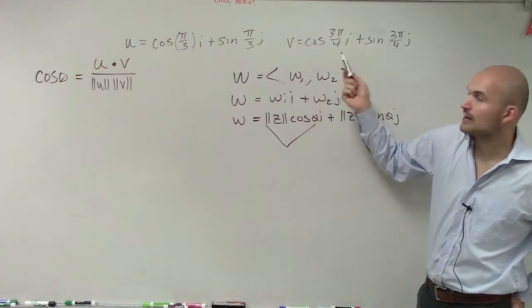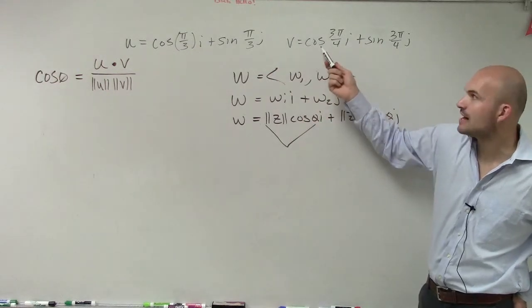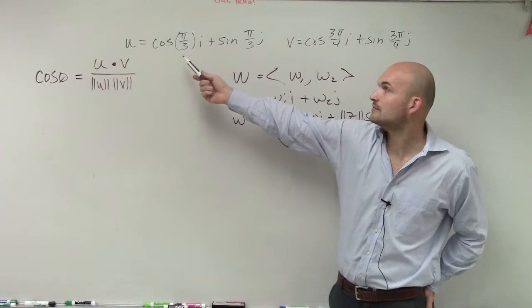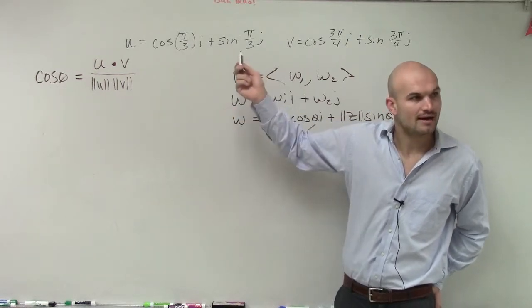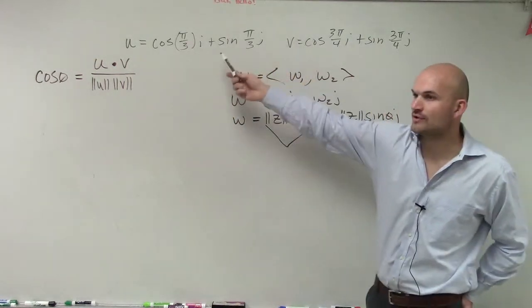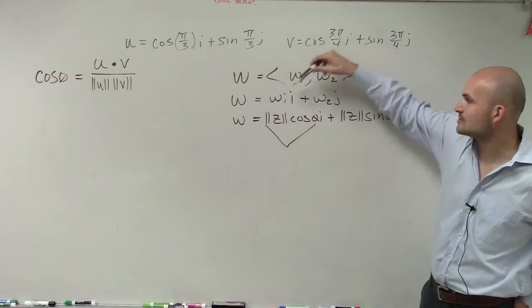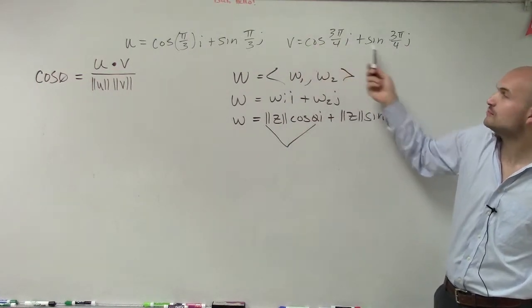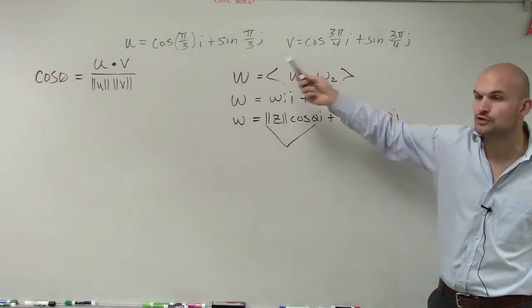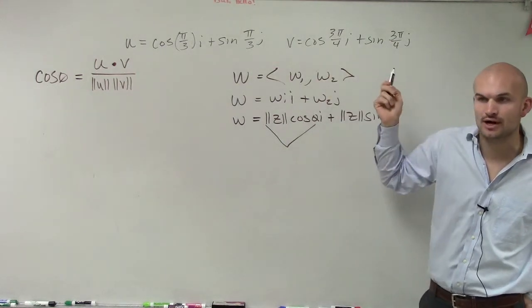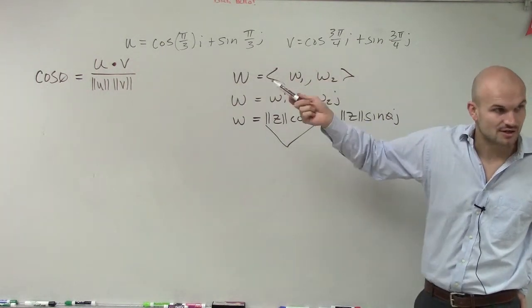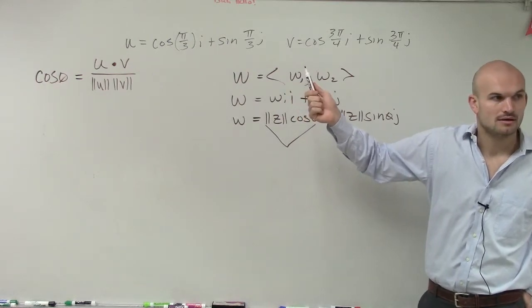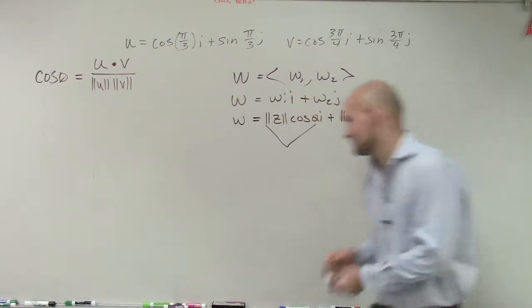We can see that we have our angles. Can we evaluate cosine of 3π/4? And can we evaluate cosine of π/3? Yes. Therefore, by evaluating them, we can find out what u1, u2, v1, and v2 are. And once we know those, we can use the dot product and find the magnitude.